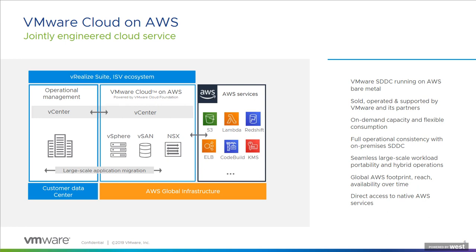A key differentiator for VMware Cloud on AWS is the integration with AWS Native Services. We have a unique high-speed, low-latency connection between our VMC SDDC and Amazon Native Services through something called an ENI — effectively a dedicated network connection from your VMC environment into the native AWS environment. This gives our customers direct access to native cloud services and allows them to leverage those to create some very interesting architectures.